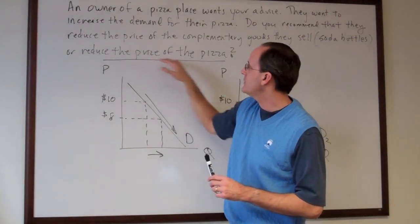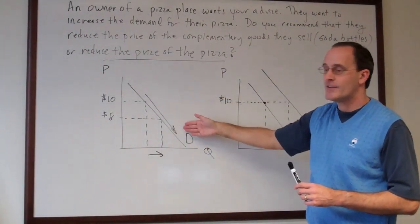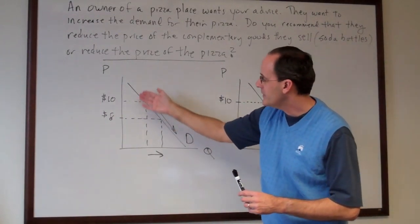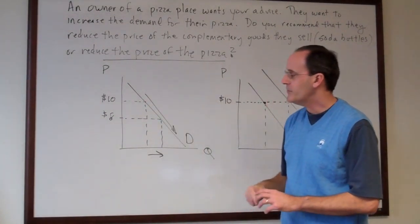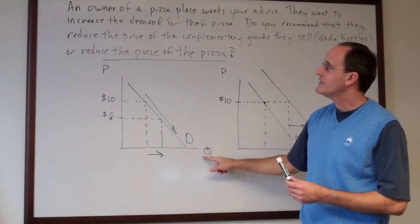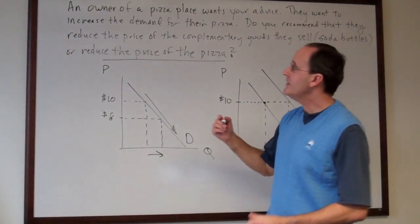On the other hand, if you reduce the price of the pizza, you would just slide along the demand curve. And that would be an increase in the quantity demanded solely along the x-axis here.